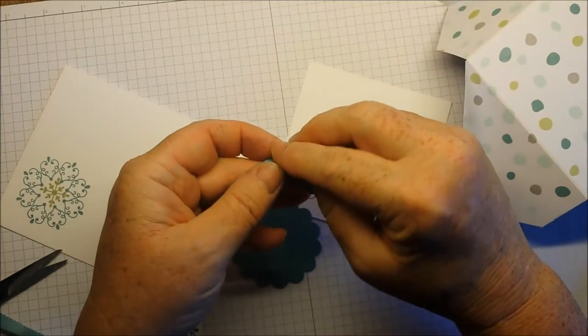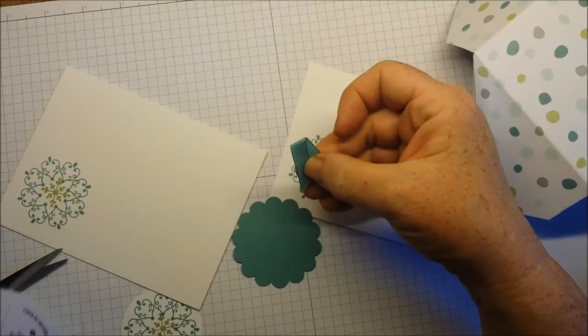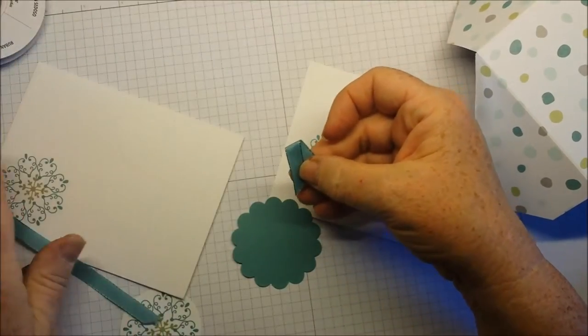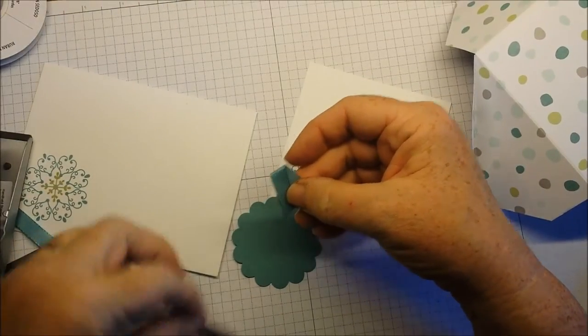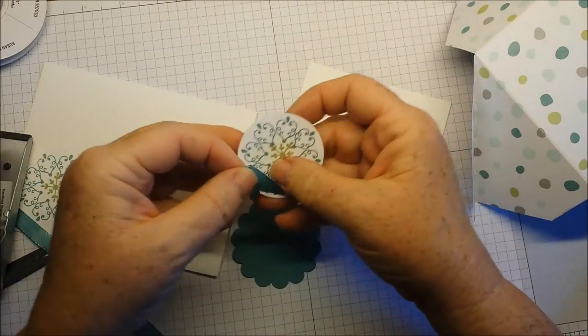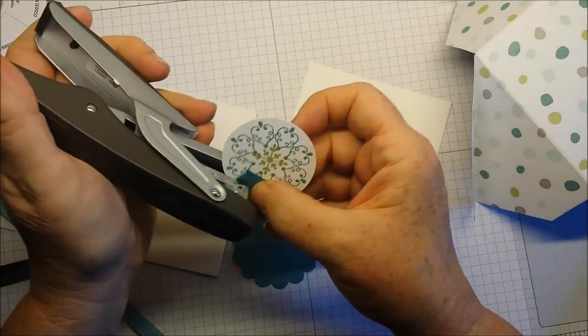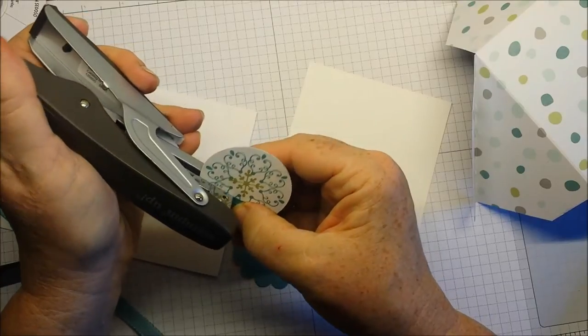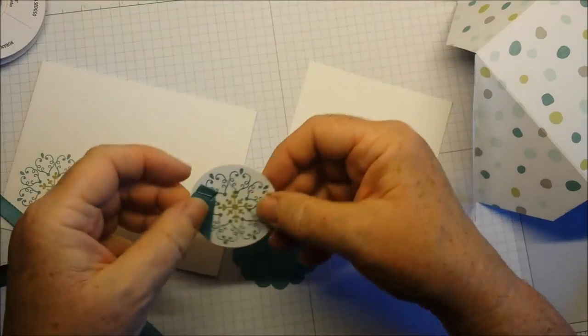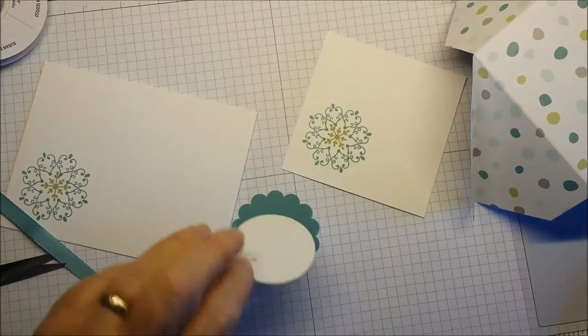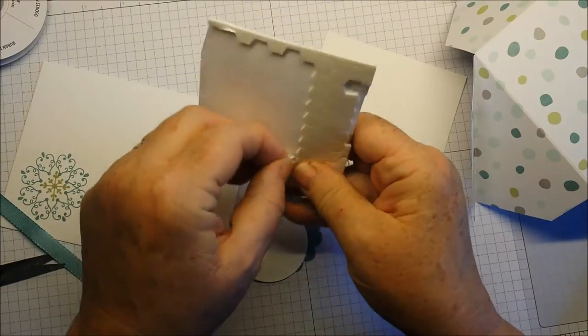I'm using just a tiny piece of Lost Lagoon Silky Taffeta Ribbon. I'm going to staple this onto my circle. I'm using our Stampin' Up stapler. And then I'm going to put this onto the scallop circle with dimensionals.